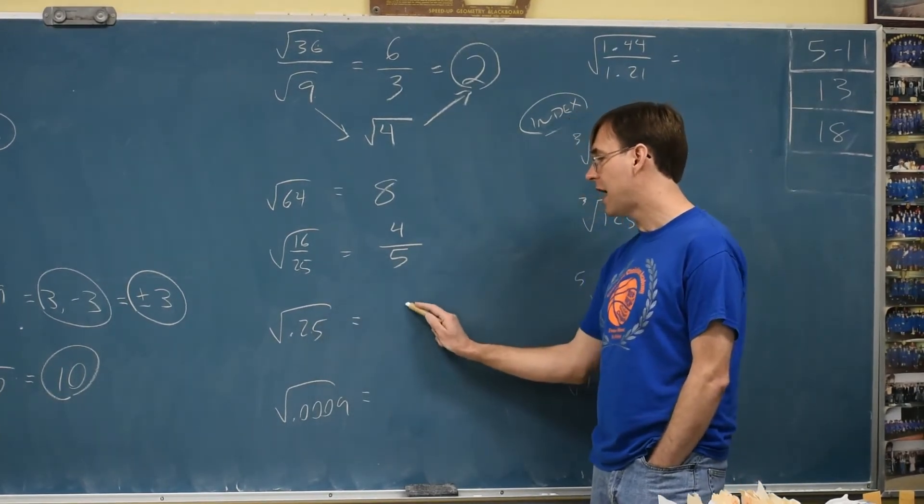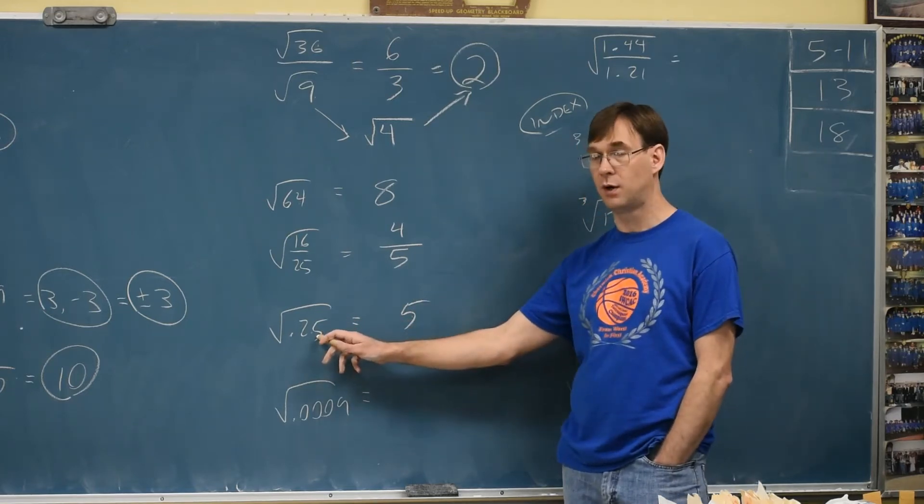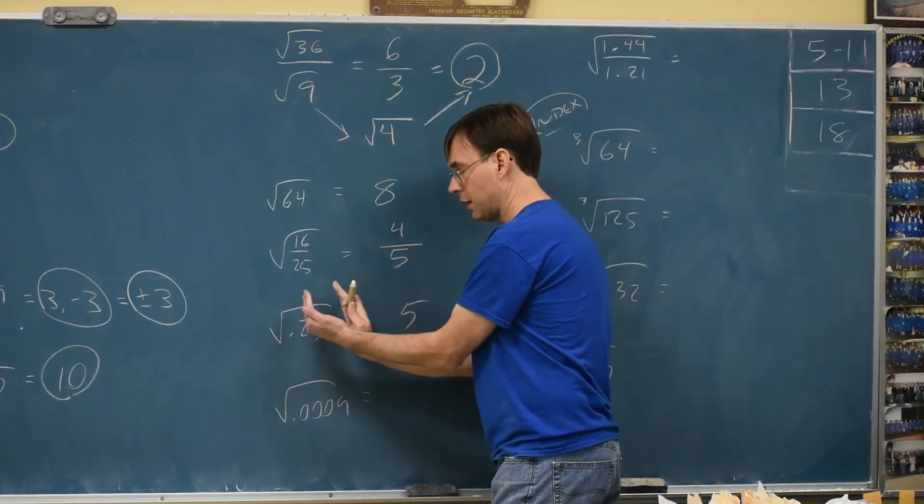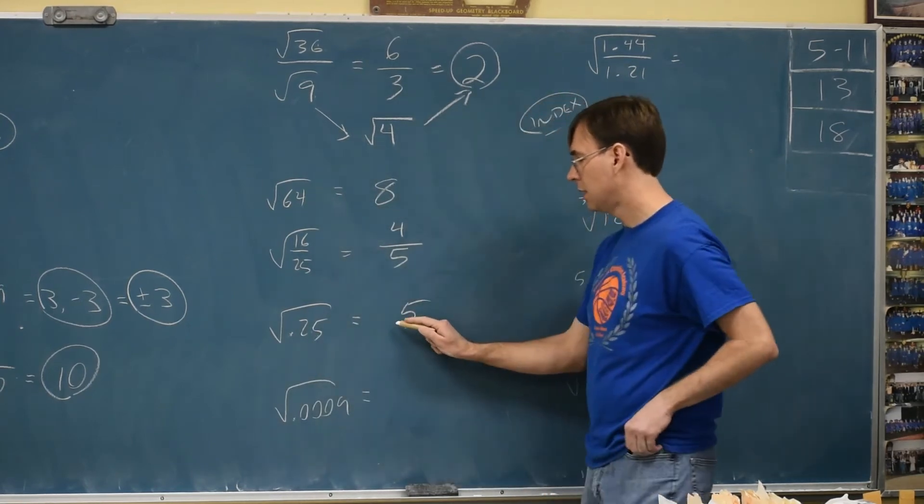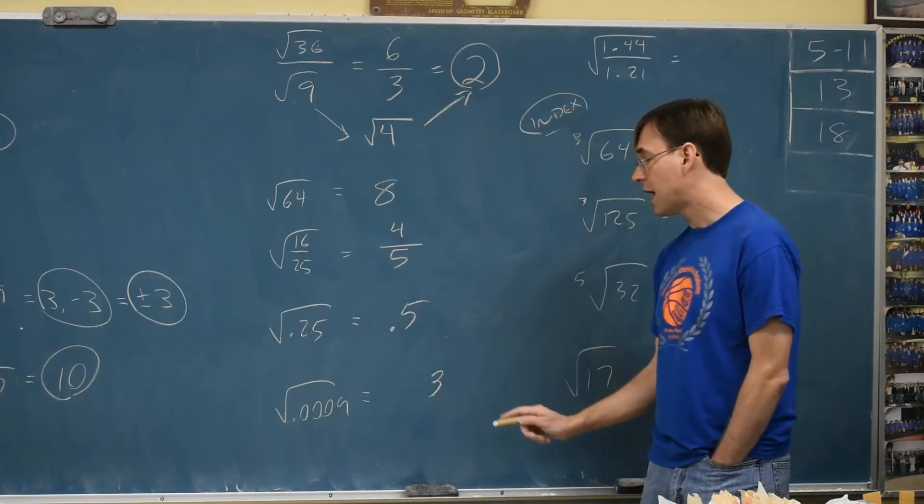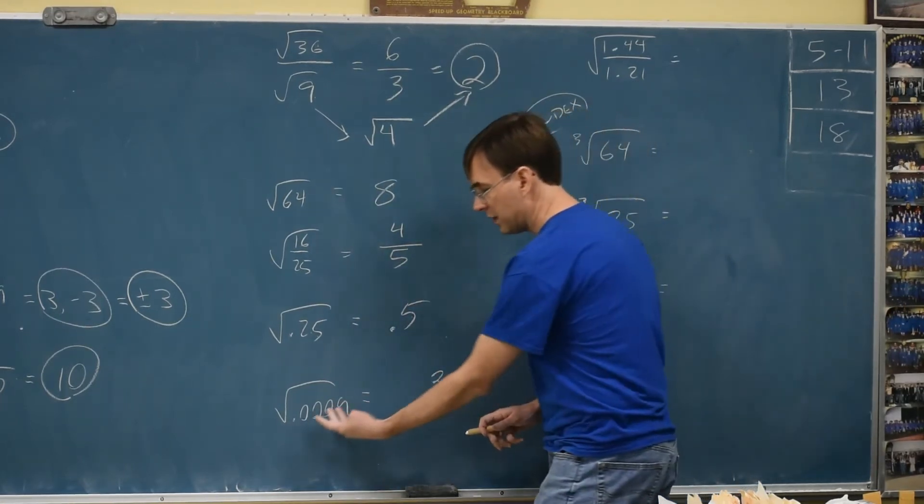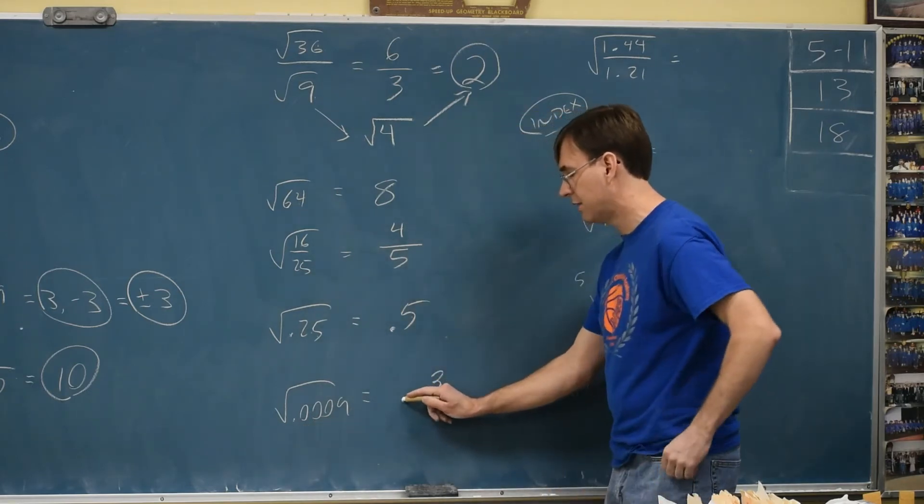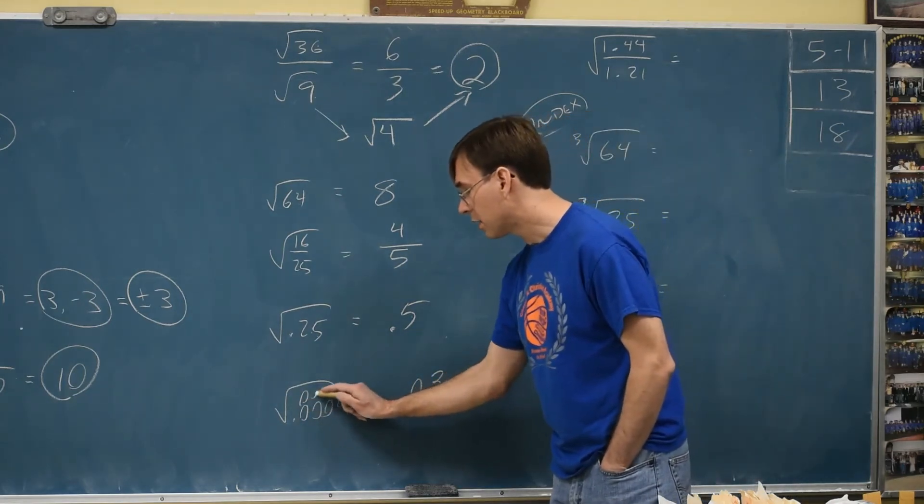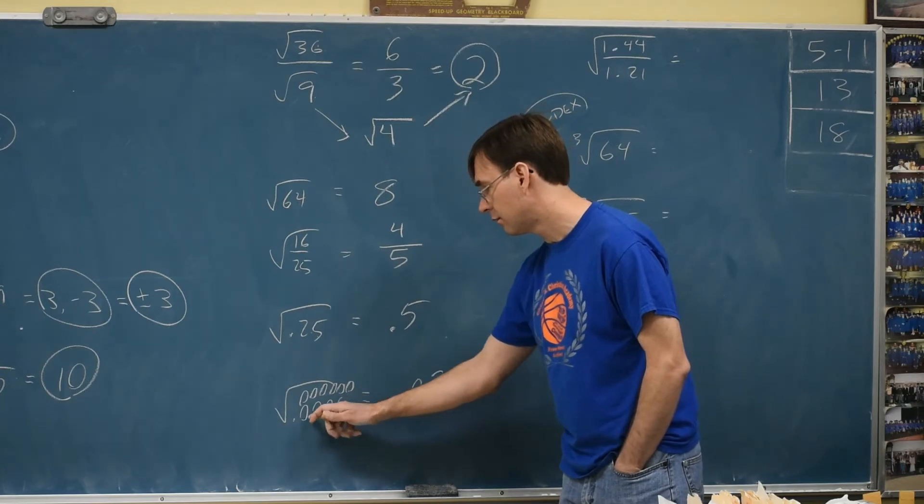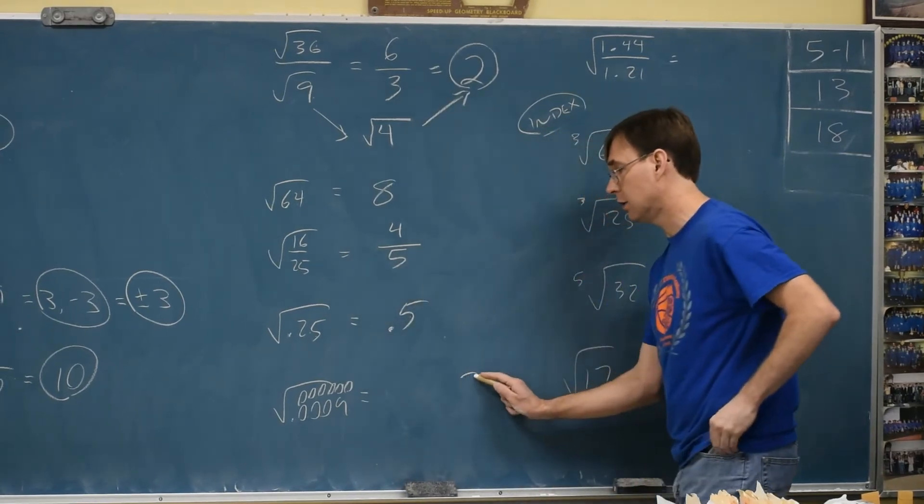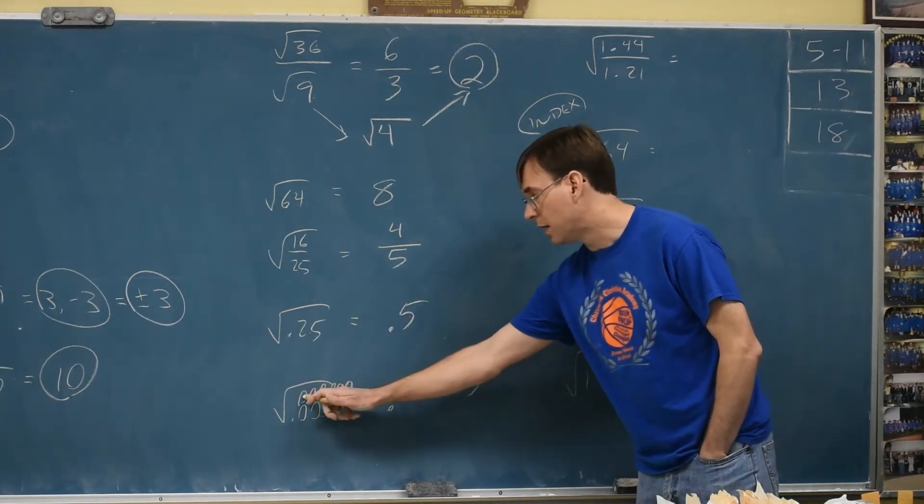Decimals. Square root of 25 will have something to do with 5, because 5 times 5 is 25. The decimal is going to just make it be half the length. So if this had 2 positions, this just has 1 position. 0.009? Well, 3 times 3 is how they made the 9. But if this had 4 positions, this just needs to have a decimal and then 2 positions. So we would need a 0 there.